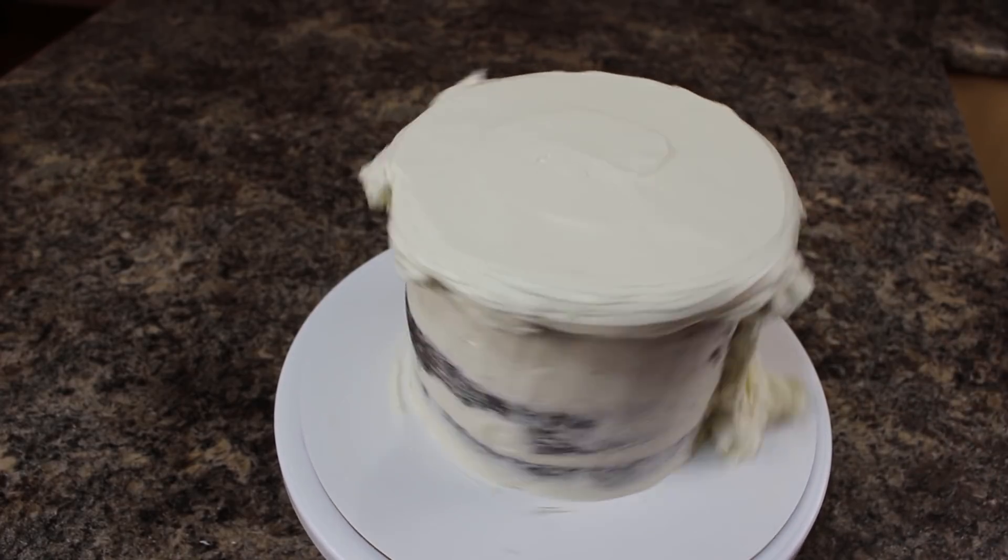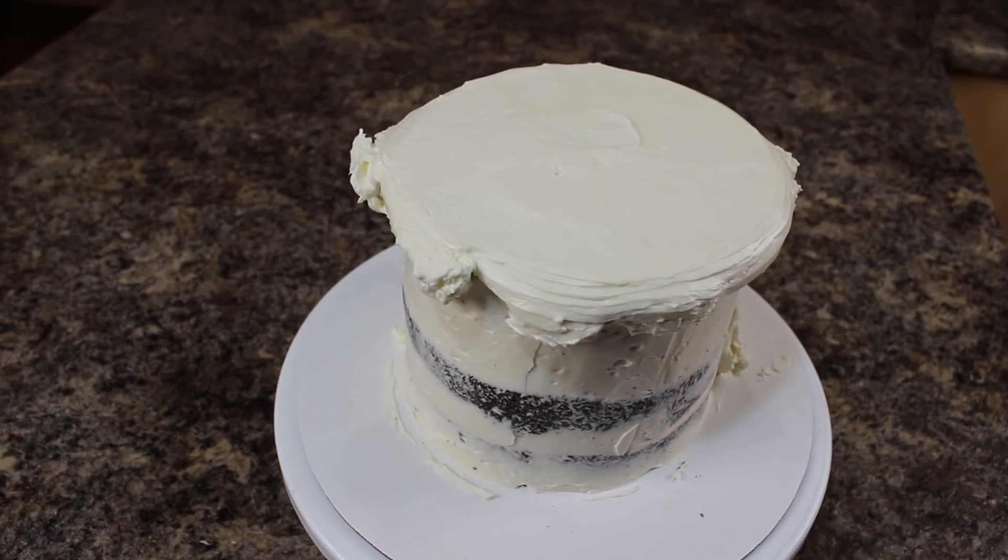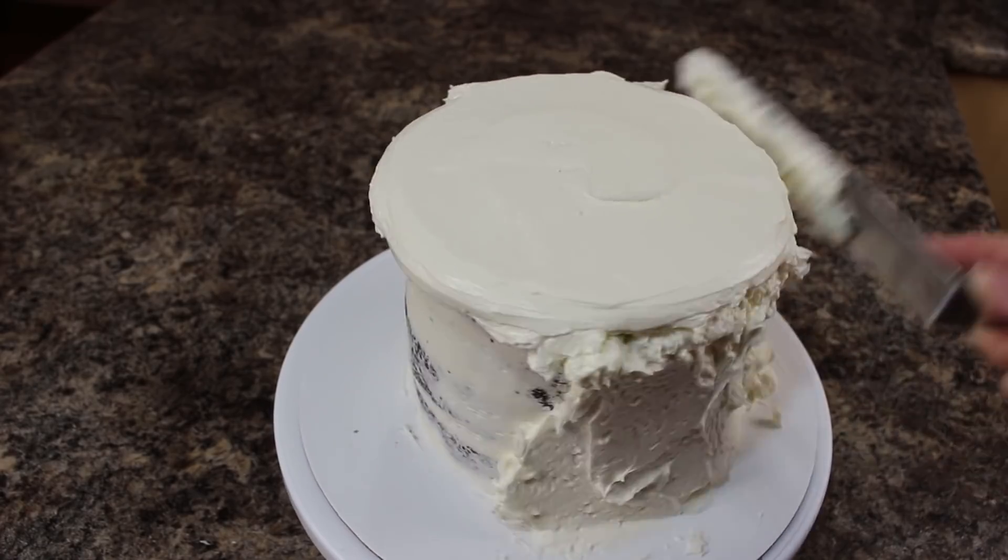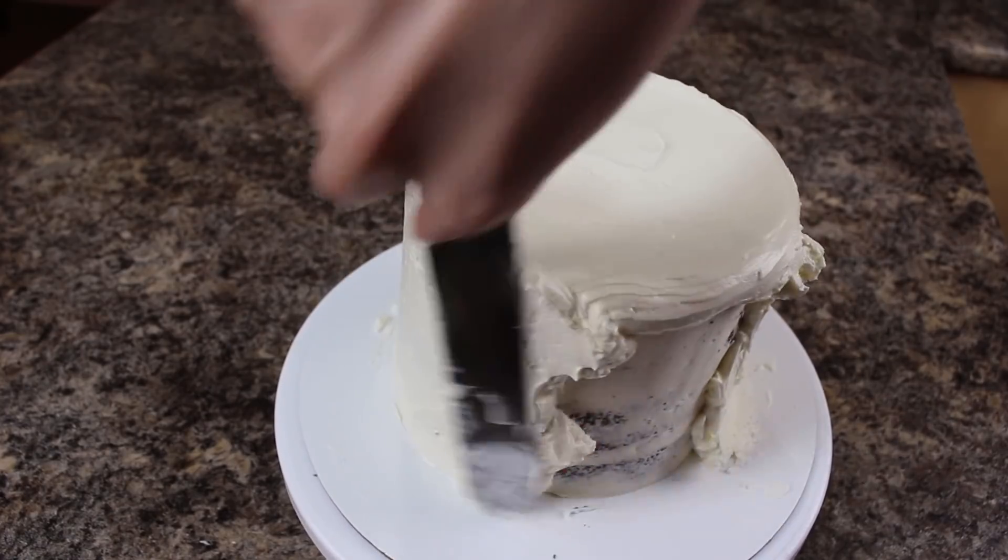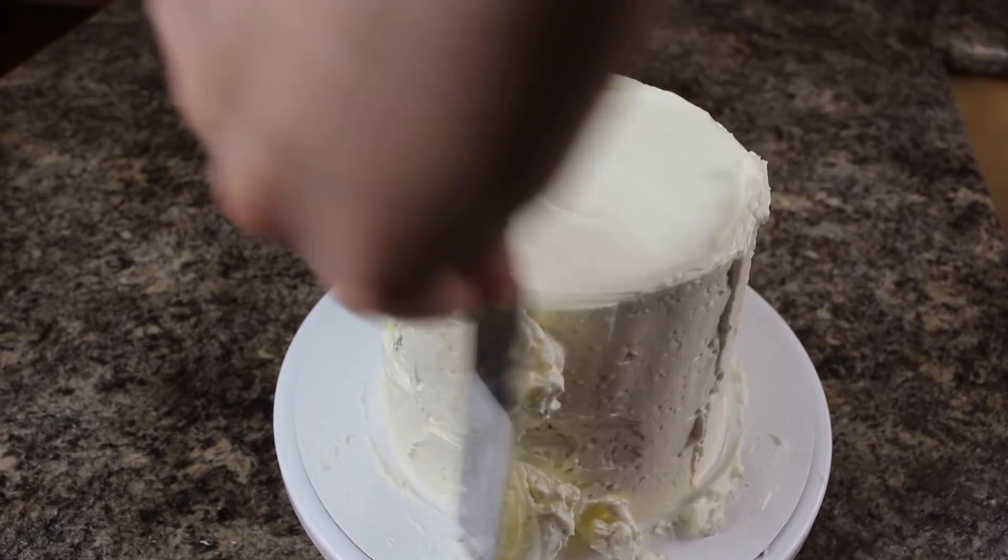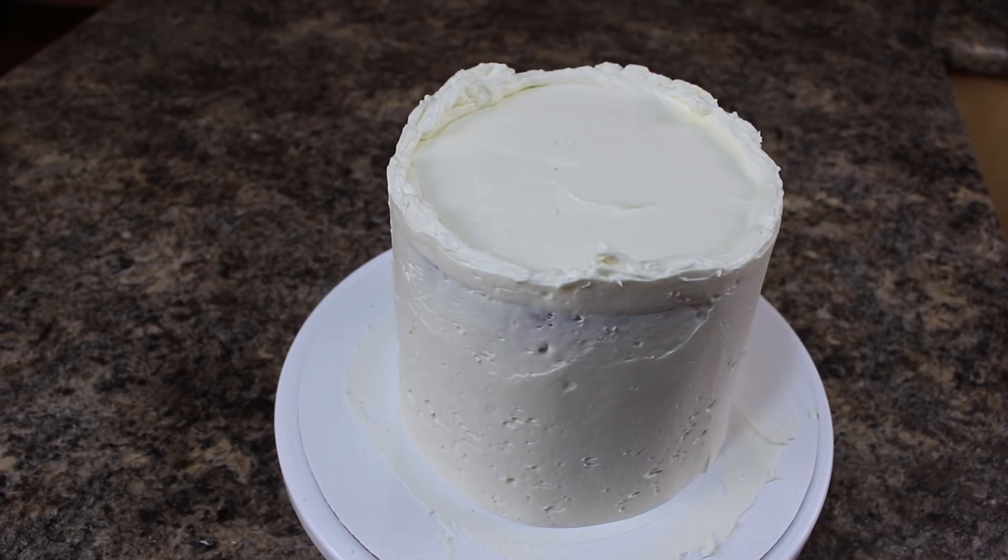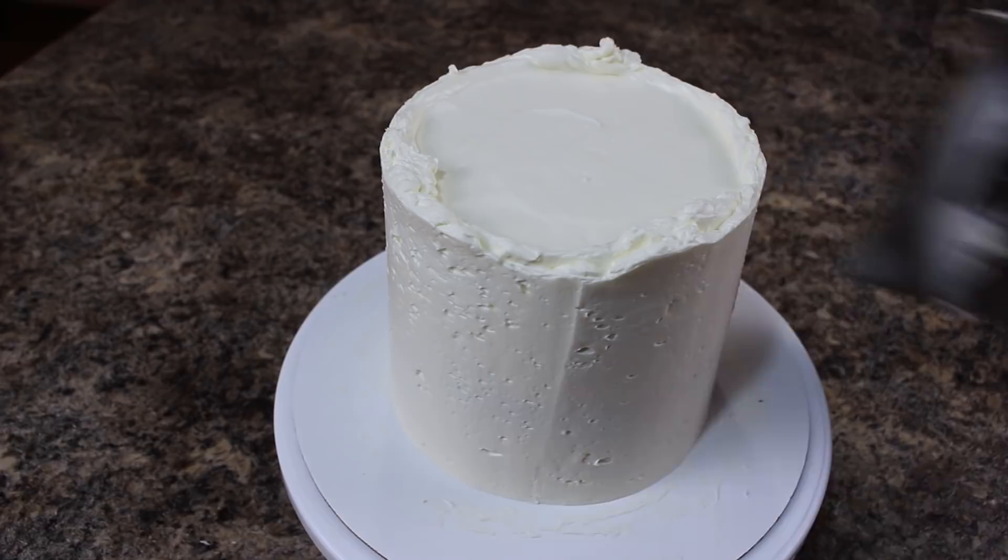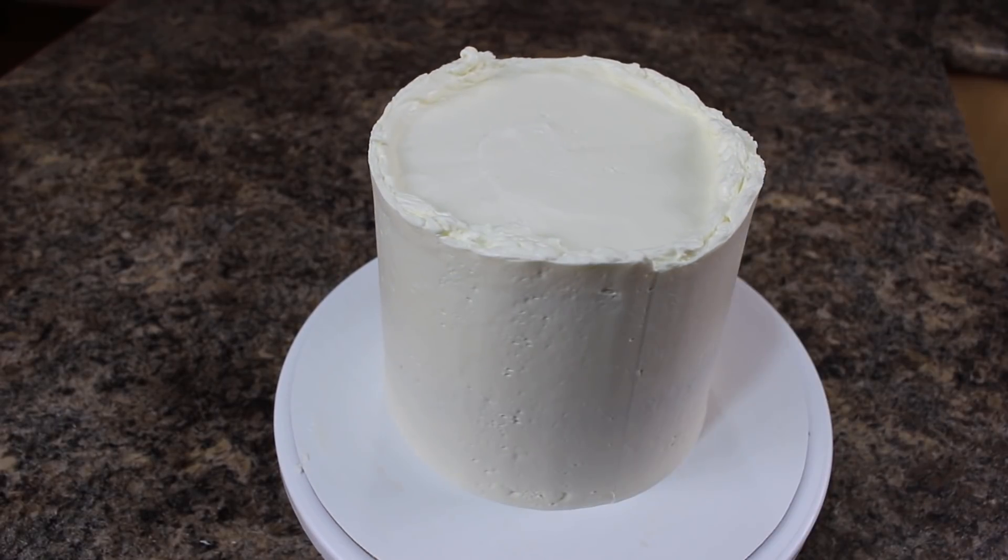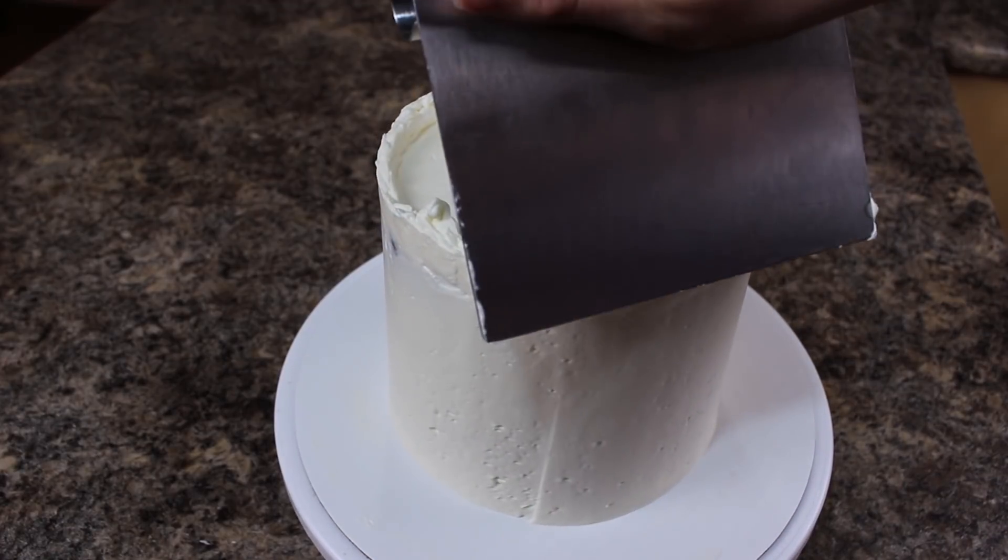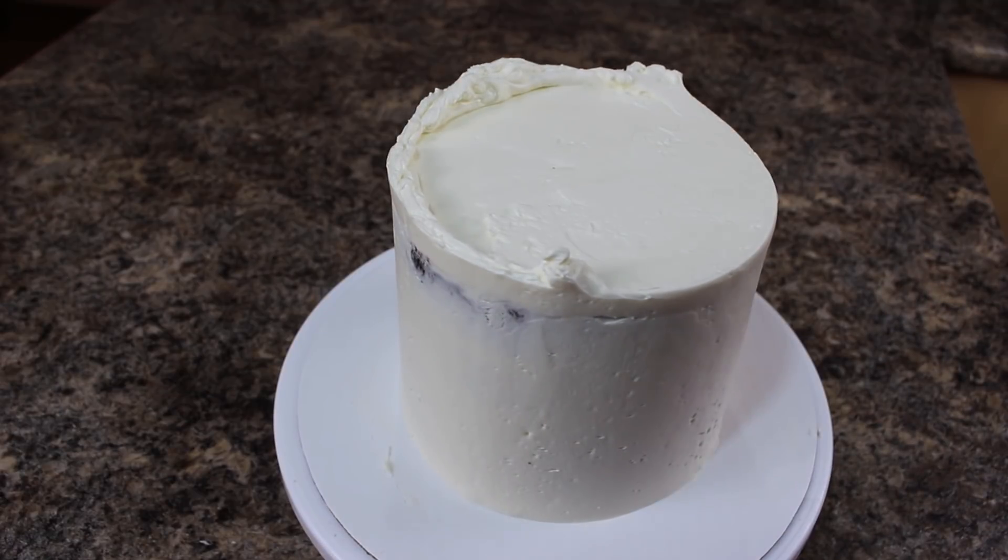I'm applying more buttercream to the sides of my cake and then once I have a thick layer on there, I'm grabbing my bench scraper and just going along the sides until they're completely smooth. For all the buttercream that accumulated on the top of my cake, I'm grabbing my bench scraper again and just pulling that all into the middle, just being careful not to mess up my nice smooth level top.